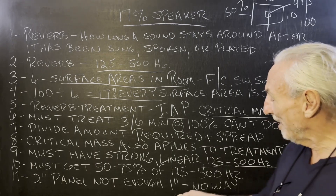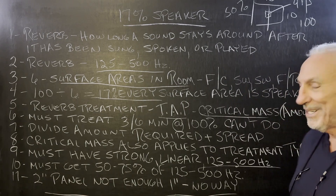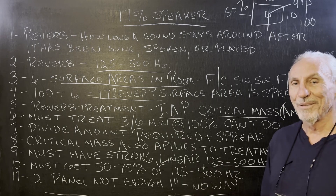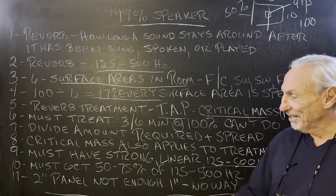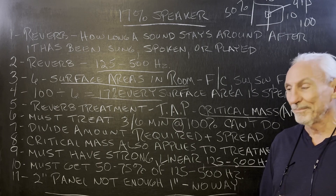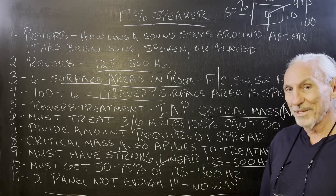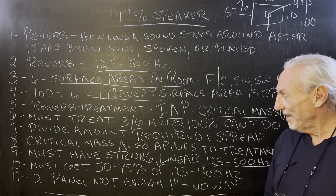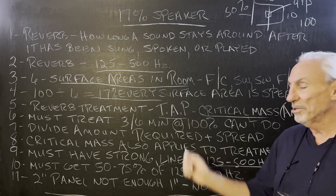Two-inch panels — not enough. We see a lot of those. We get pictures of churches with two-inch and one-inch panels, which is a real joke. They've sold the church on the idea that they need sound absorption — that deserves merit. But then they prescribe a treatment type that doesn't work, doesn't get enough of the 125 to 500 range, and they don't put enough in the right place. So it's a lose, lose, lose across the board.